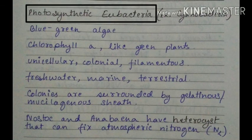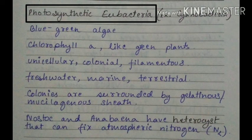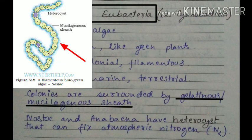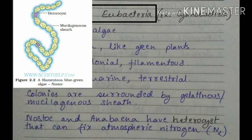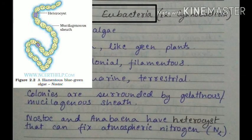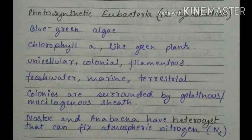Moving on to photosynthetic eubacteria — for example, cyanobacteria. They are also called blue-green algae. They have chlorophyll A like green plants, which is why they can perform photosynthesis. They may be unicellular, colonial or filamentous, and may live in freshwater, marine water, or they may be terrestrial. Colonies are surrounded by a gelatinous or mucilaginous sheet. Some of them, like Nostoc and Anabaena, have heterocysts — cells capable of fixing atmospheric nitrogen.